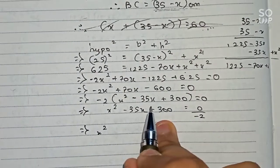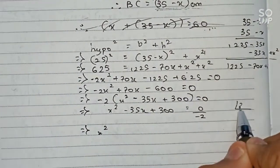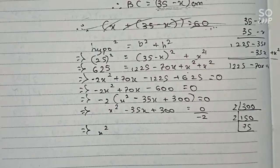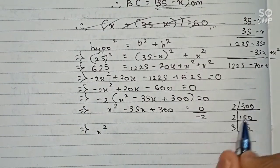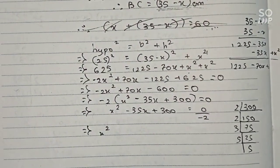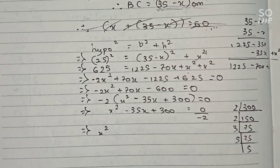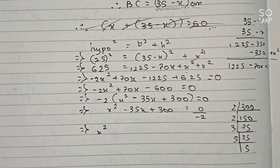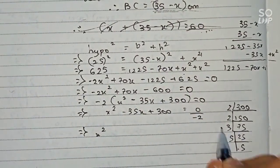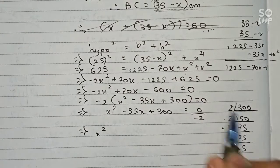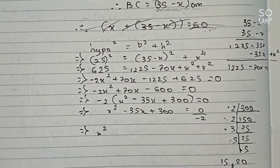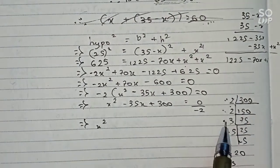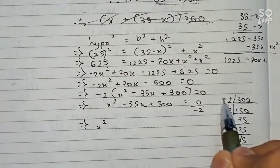This is in quadratic form, so we need to factorize 300. By prime factorization: 300 divided by 2 is 150, by 2 again is 75, by 3 is 25, and then 5 times 5. We need two numbers that multiply to 300 and add to 35. We can see: 5 times 3 is 15, and 2 times 2 times 5 is 20, and 15 plus 20 equals 35.